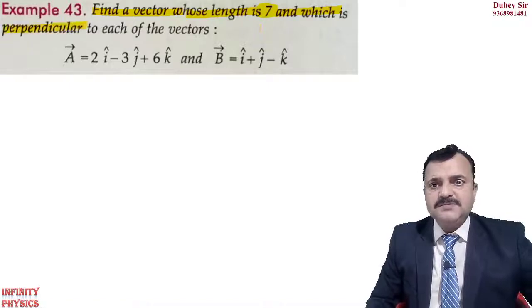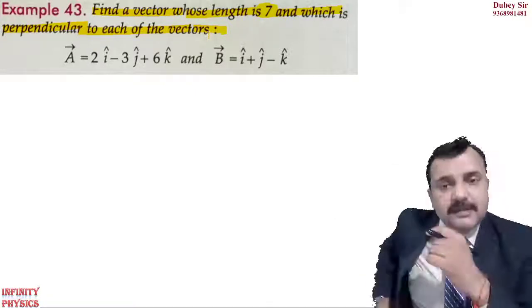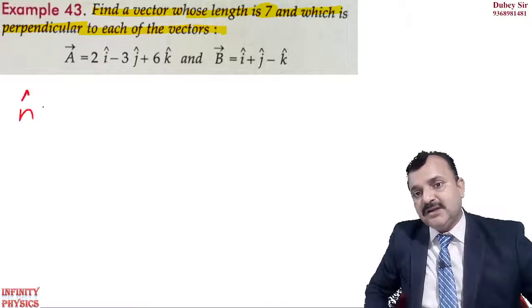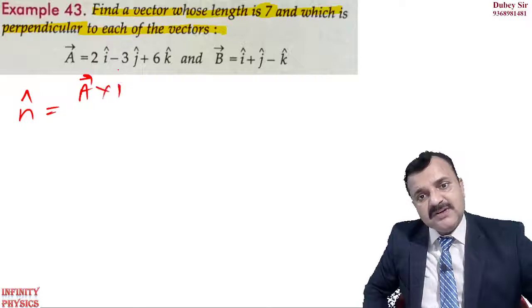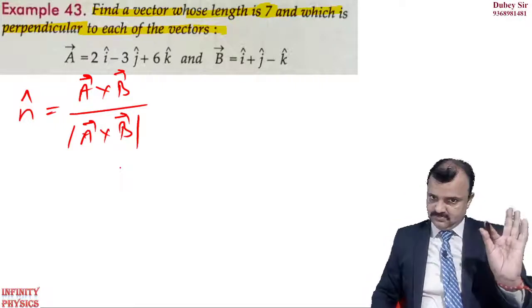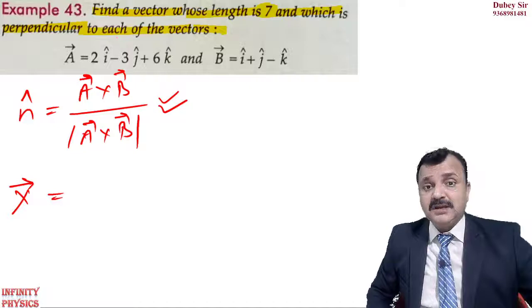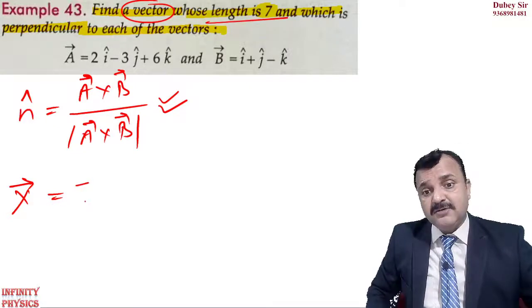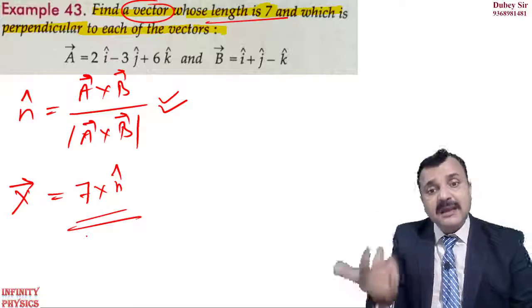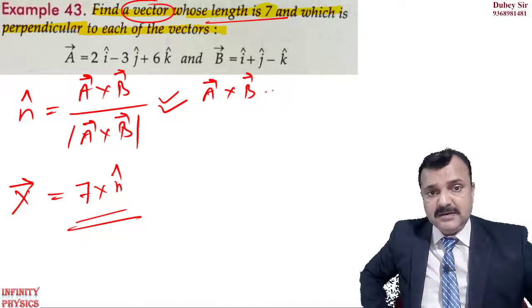We need to find a vector of length 7 perpendicular to both A and B. The direction is given by n̂, which we find as (A×B) / |A×B|. The required vector X = 7 × n̂. So first calculate A cross B, then find its modulus and divide, then multiply by 7. The given vectors are A: 2, minus 3, 6 and B: 1, 1, minus 1.